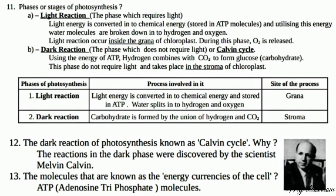Summary of phases of photosynthesis — process involved and site. Light reaction: light energy is converted into chemical energy stored in ATP; water splits into hydrogen and oxygen; occurs in the grana. Dark reaction: carbohydrate is formed by the union of hydrogen and carbon dioxide; occurs in the stroma.